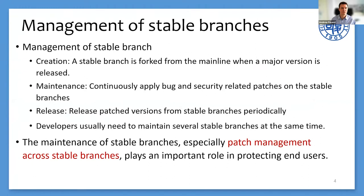Let's go further into the management of stable branches. A stable branch is forked from the mainline where a major version is released. After that, developers continuously apply bug and security-related patches on stable branches, and release patched versions from stable branches periodically. By this way, users of old versions can obtain fixed versions and keep their applications protected from disclosed vulnerabilities. Developers usually need to maintain several stable branches at the same time, so patch management across stable branches plays an important role in protecting end users.